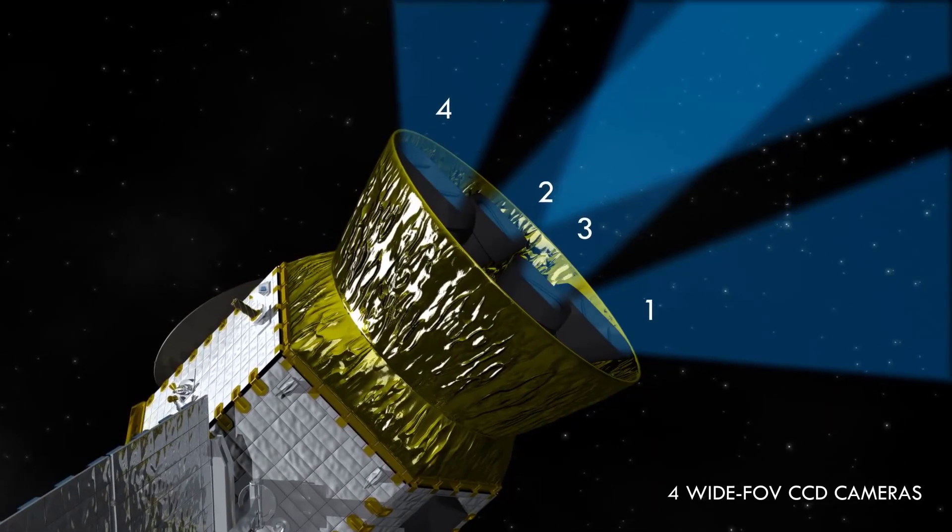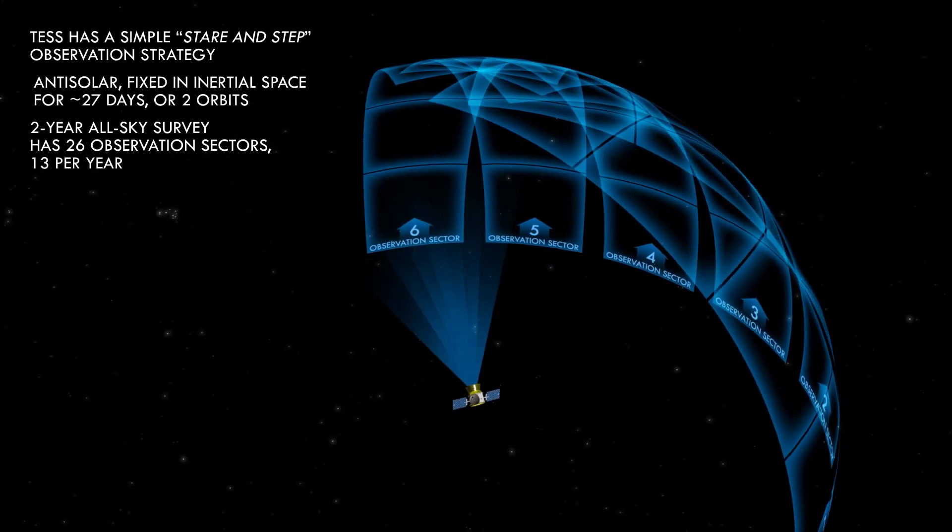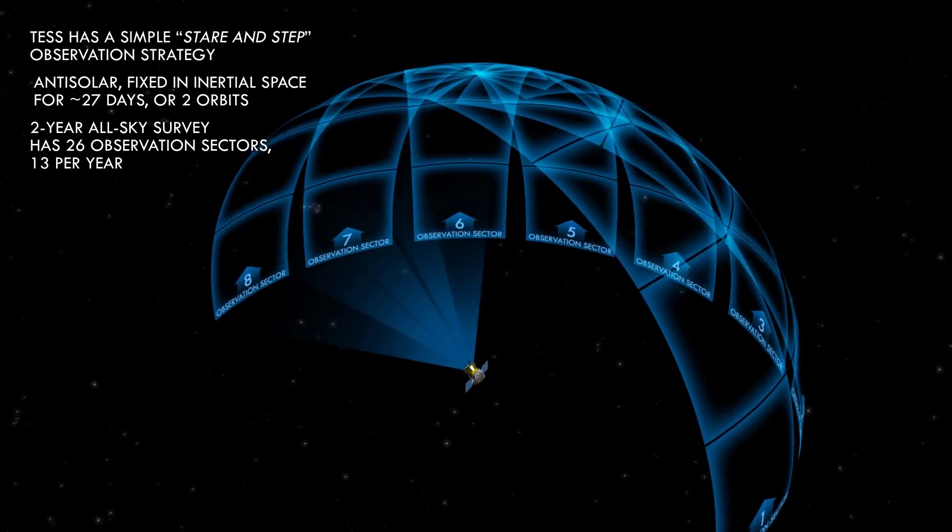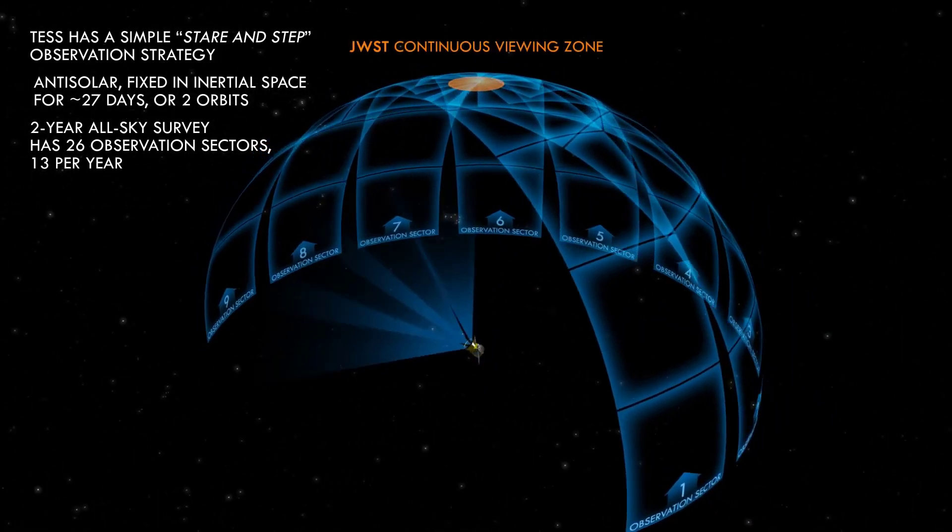Once in orbit, TESS will use its four onboard cameras to map both the northern and southern hemispheres in 13 sectors each, with a planned mission duration of two years. That's just the initial mission timeline, and it certainly has the potential to be extended well after that initial mission.